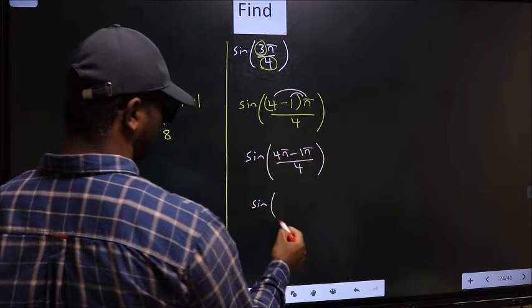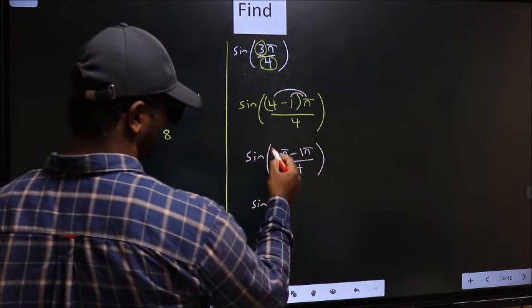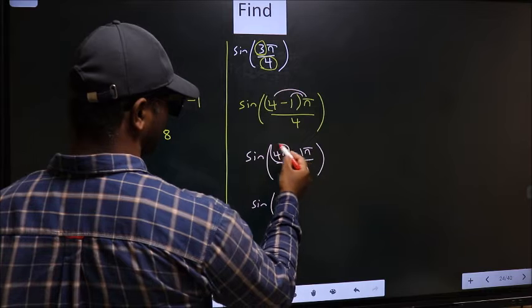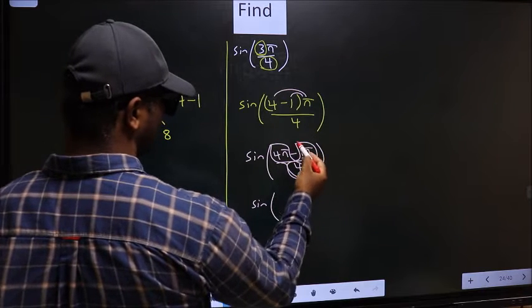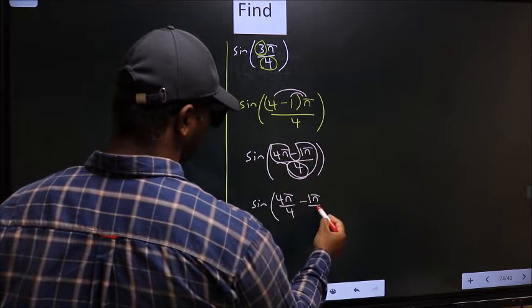Next, sin. Now you should split the denominator in this way. That is 4π/4 - 1π/4.